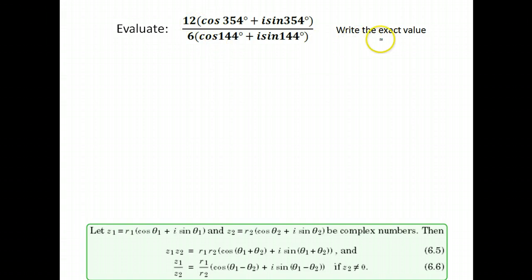All right, let's try another. Again, we're asked to write the exact value. We are dividing complex numbers. We know they're complex because we have this i here, and they're in trigonometric form. So we're asked to divide the numbers in front. We'll have 12 divided by 6, and then we subtract the angles, numerator minus denominator. So I have cosine of 354 minus 144 plus i sine 354 minus 144.